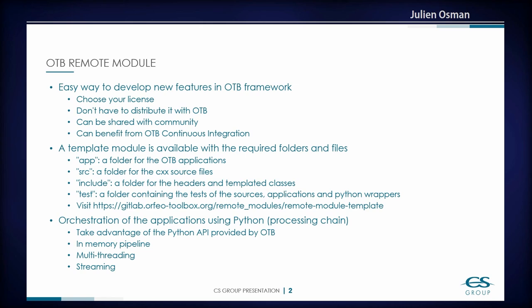For example, you want to build your application but you also want to use some filters from the OTB in your application, and you want to use the streaming capability of the Orfeo Toolbox. This is possible. You have the possibility to git clone the template from our GitLab and you will have everything set up for you. You can add your new applications in the app directory. If you write your own filters, you can add them to the source and include directories, and also you can add some tests in the test directory, because you should be testing your code. This is your code and you can share it if you want, or you can keep it for your own usage.